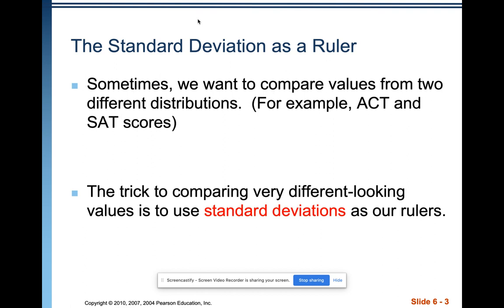One of the nice things about categorical data is we can move from frequencies to relative frequencies or percents to put data from two different groups on the same scale, even if they don't have the same sample size. One nice thing about quantitative data is we can do the same thing by converting the observations in their original distributions into standard deviation units.